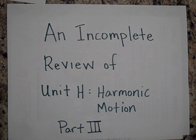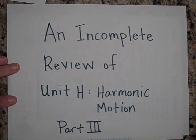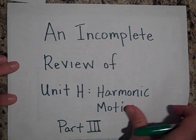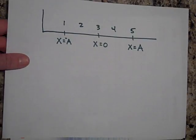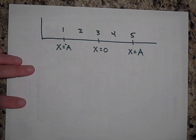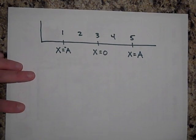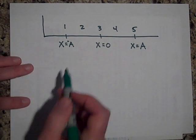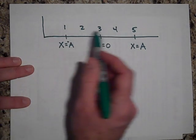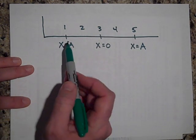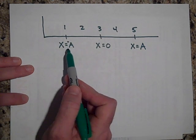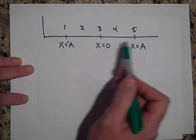We're back with an incomplete review of Unit H Harmonic Motion, Part 3. We have here an object that's going to move back and forth in simple harmonic motion with an amplitude of A.